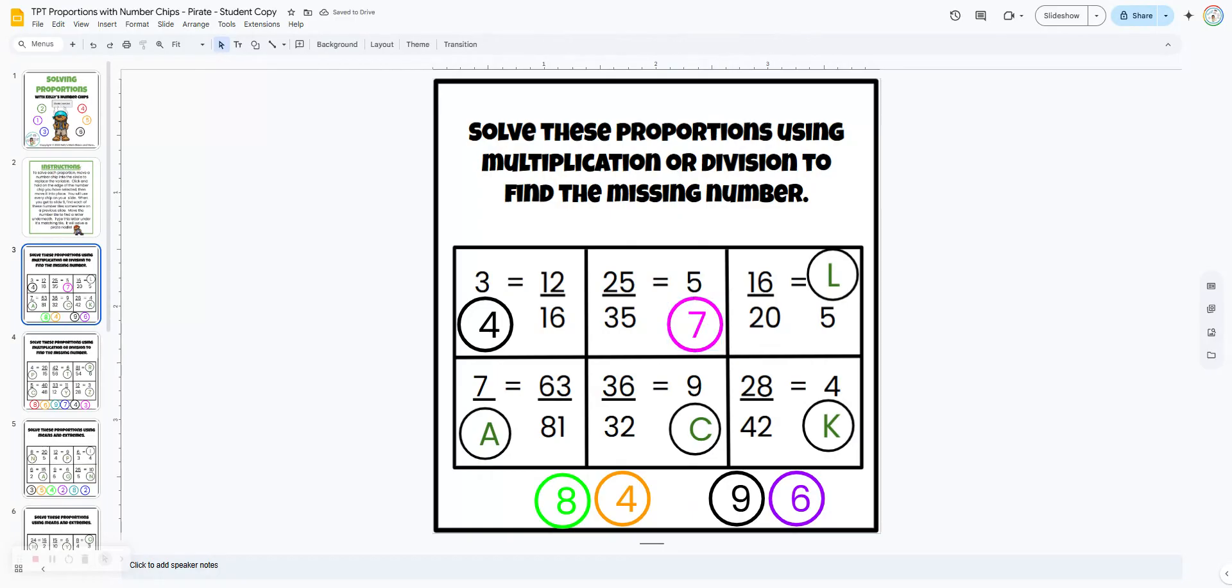Now they're going to use every single number. So every slide has every number the students need. If they get down toward the end and the numbers aren't working, they know they've made an error somewhere and they need to go back and check. So in that way it's self-checking.